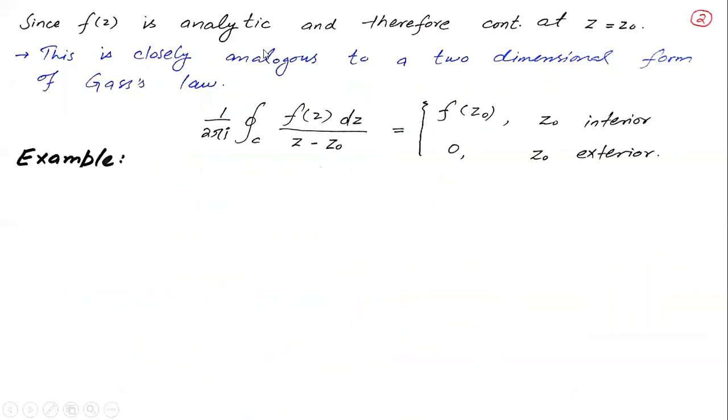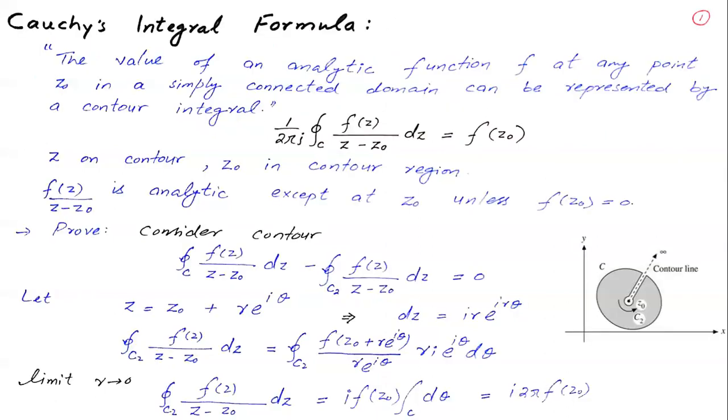Since f(z) is analytic and therefore continuous at z = z0, the analyticity holds in the region. This is closely analogous to a two-dimensional form of Gauss's law, so you can take this as a representation of Gauss's law.